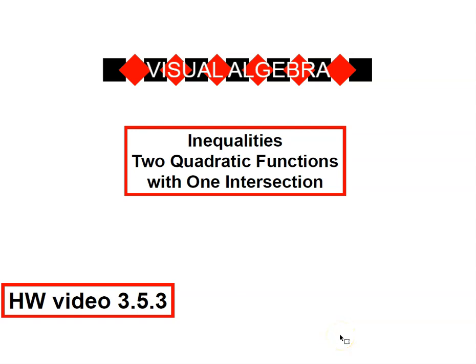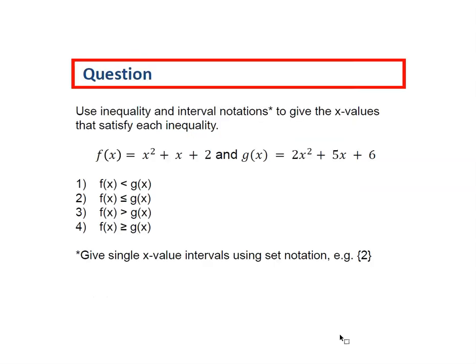This is homework video 3.5.3 where we'll look at inequalities of two quadratic functions with one intersection. Our question is to use inequality and interval notation and give the x values that satisfy each inequality. We have two quadratic functions and we'll look at the four cases: less than, less than or equal to, greater than, or greater than or equal to. Notice that we might need to give single value intervals using set notation.